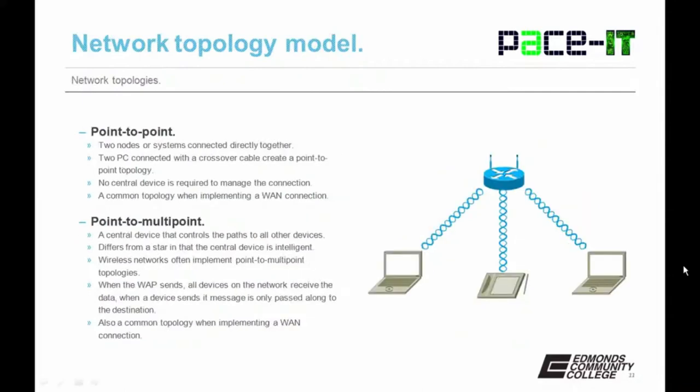Now let's move on to the point-to-point topology, where two nodes or systems are connected directly together. If you're talking about two PCs, that's when they use a crossover cable to create a point-to-point topology — there's no central device to manage the connection. This is still a common topology when implemented across a WAN connection utilizing a T1 line.